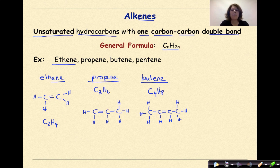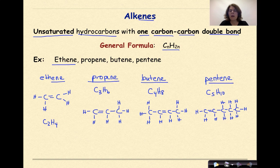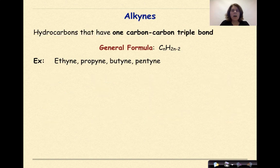Let's look at our last alkene example, pentene. 'Pent' means five, so C5H10 — H2n means 2×5=10. I draw five carbons, place a double bond between one pair, then add hydrogens to make sure each carbon has four bonds. Counting the hydrogens — 1, 2, 3, 4, 5, 6, 7, 8, 9, 10 — this is C5H10 and a representation of one type of pentene.